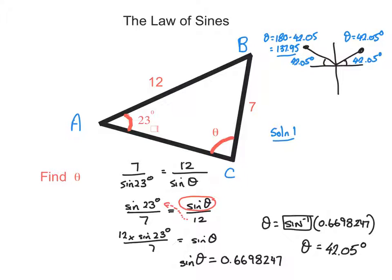So we know if we give these angles in this triangle some letters, for solution 1, we know that angle A is 23 degrees. And we know that angle C, which is just we worked out as theta, is 42.05 degrees. And therefore subtracting from 180, we get that angle B is going to be 114.95 degrees. So that we know is solution 1.